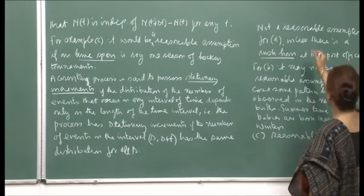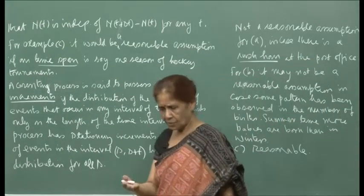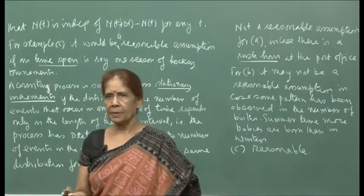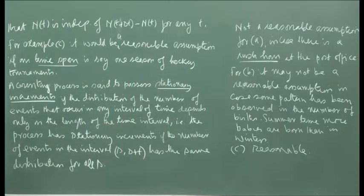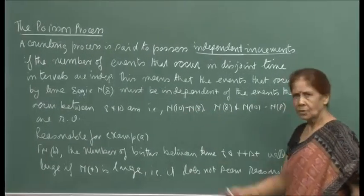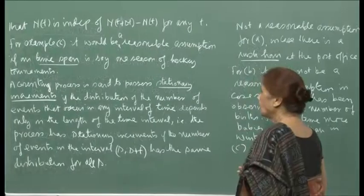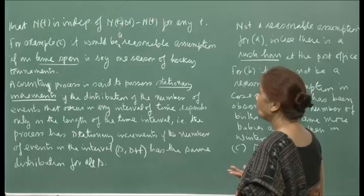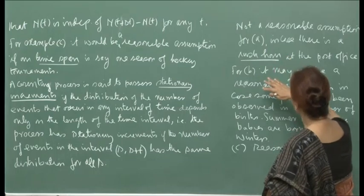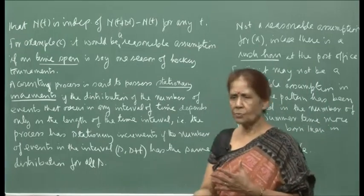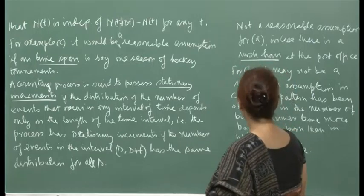We can again check whether stationary increments is a reasonable assumption for our examples. For A — a post office or a bank — it is not a reasonable assumption, because there may be a rush hour. If there is a rush hour, then N(8) and N(10) minus N(8) would not be independent. But if you ignore the rush hour and look at the counting process for a post office, then stationary increments may be a reasonable assumption.